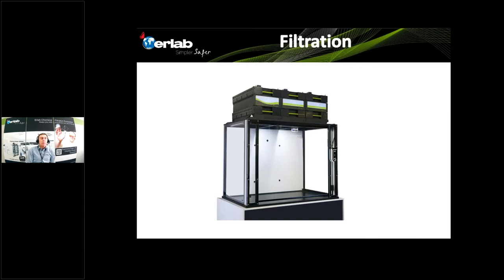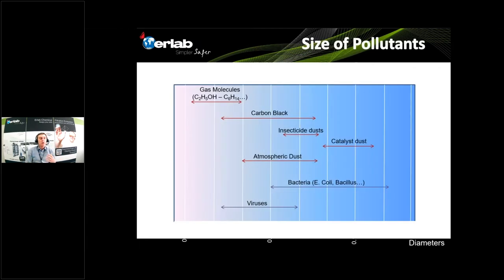The second important technology used for recirculatory filtration fume cupboards — called fume hood or fume cupboard depending on where you are in the world — is the ability to filter. Before talking about the technologies themselves, when we talk about air pollution, we have to consider that it can be a mix of different kinds of pollutants: gas molecules, liquids or solids, with a size range from 0.1 nanometers up to 1 millimeter.